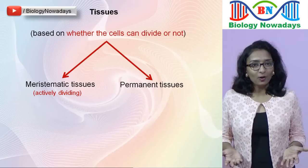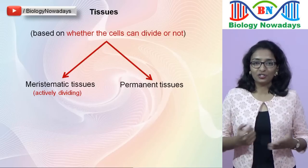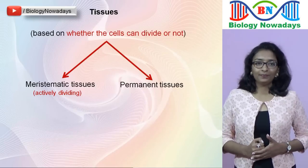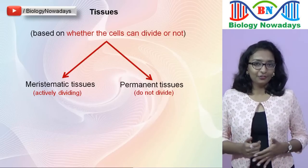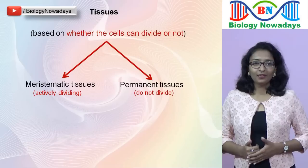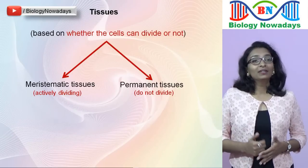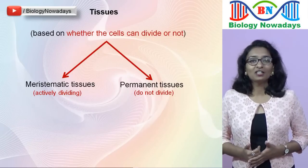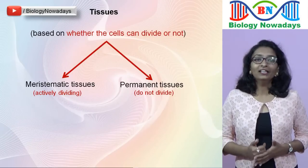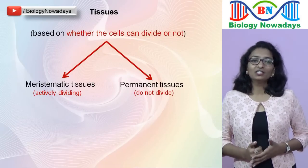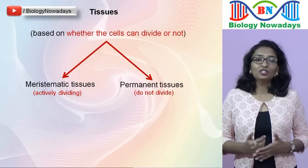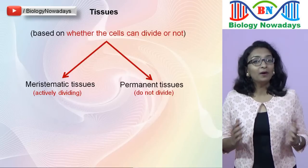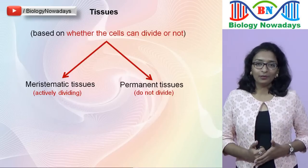Permanent tissues are also called mature tissues. They do not generally divide further. While meristematic tissues are found only at the growing regions of a plant, the permanent tissues make up the bulk of the plant body.